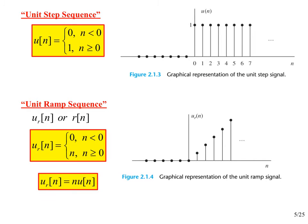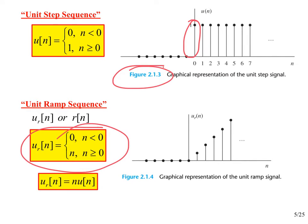Next is the unit step sequence — similar to what you've seen before in signals and systems. Some books define the first element as one-half rather than one, but we and Proakis and Manolakis do not do that. We also have the unit ramp sequence: samples that increment by one for each subsequent value of N. At N equal to five it takes the value five; for N less than zero it is zero. We can also write it as an N function turned on at time zero by the unit step.